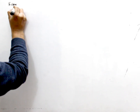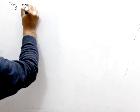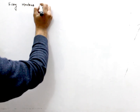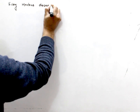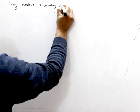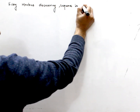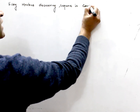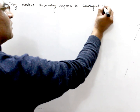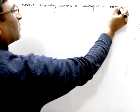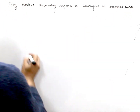Every monotone decreasing sequence is convergent if bounded below. So, proof.